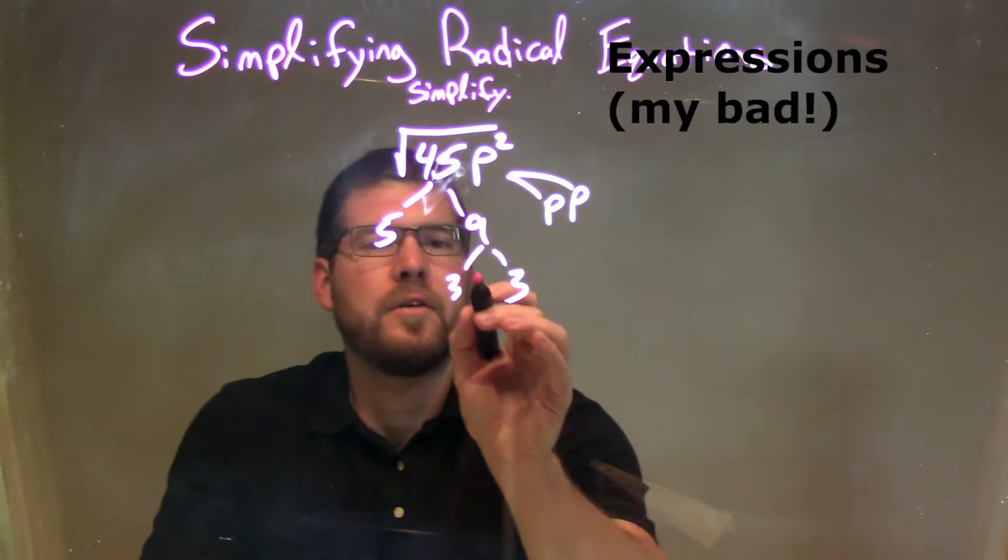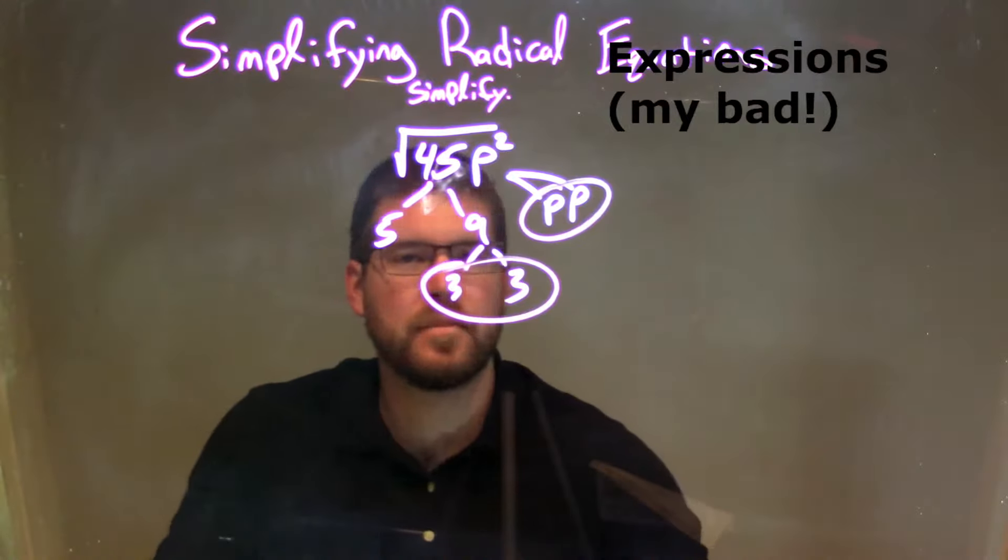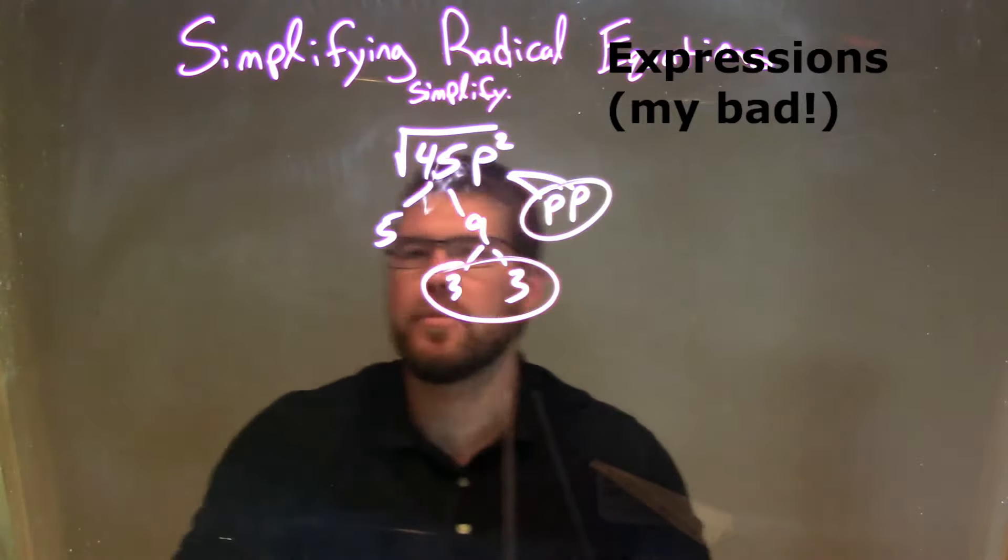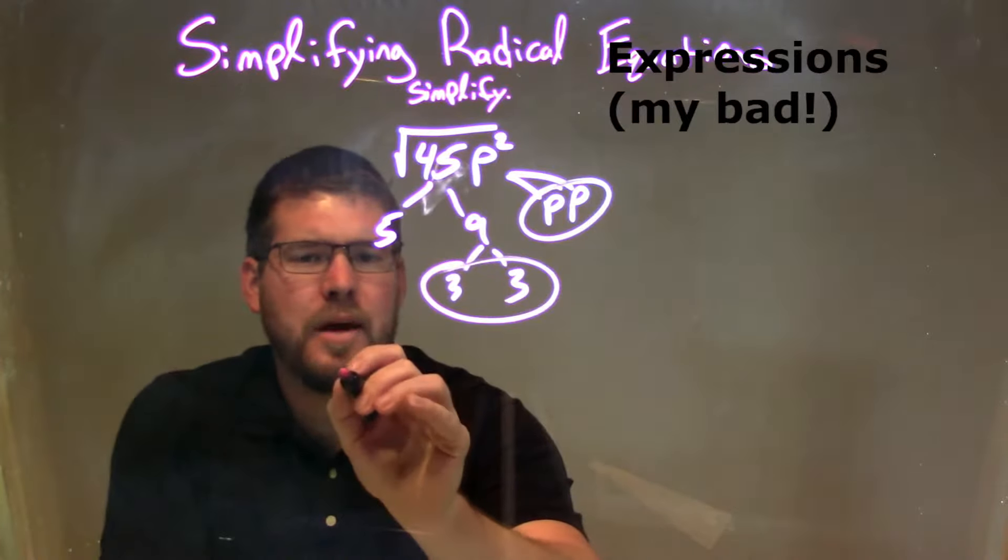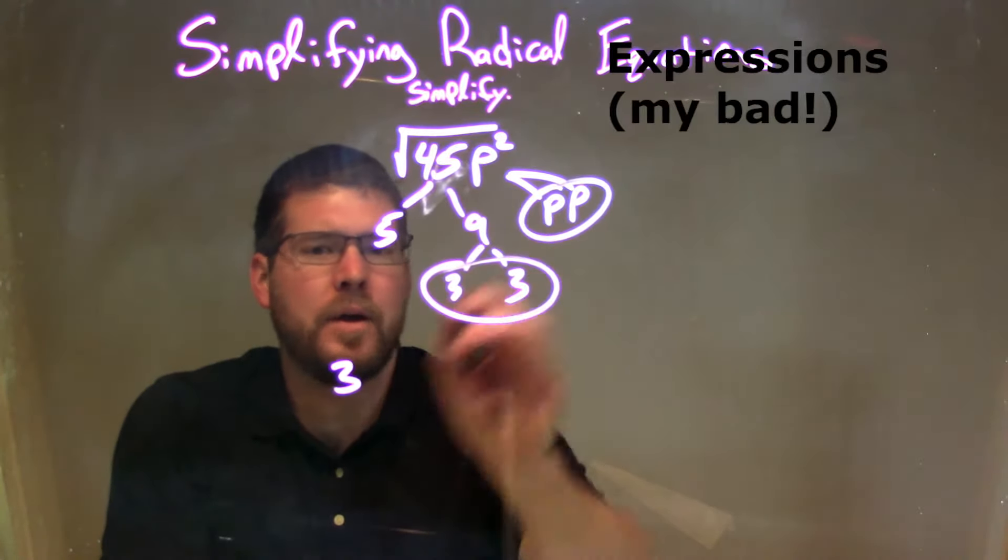I'm going to circle my pairs. I have a pair of 3s right there, and a pair of p's. 5 is the Lone Ranger by himself. I'll write my pairs out here, so I have 3 on the outside, and p right there.